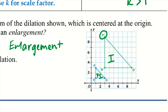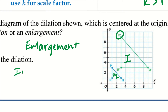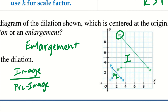Question 2: find the scale factor of the dilation. Remember, it is image over pre-image. I'll pick side PR since it goes straight up and down so I can easily count — I prefer sides that are directly up and down or side to side, to avoid having to calculate a slant length. For my pre-image, PR is 2; for my image, it is 6. So the scale factor K equals 6 over 2, which is 3.